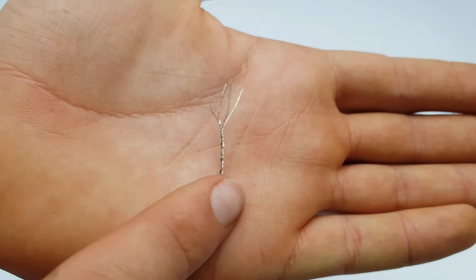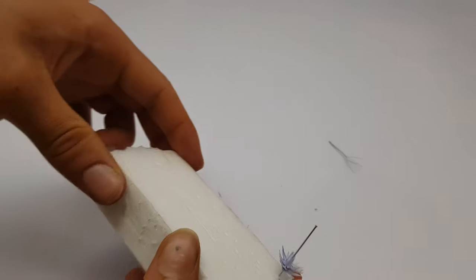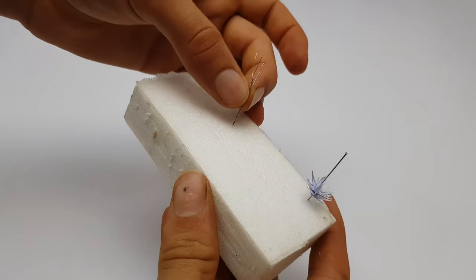Once you are finished twisting the wires it should look something like this, and you can use a block of foam to hold it in place while painting.